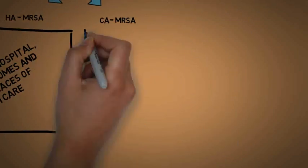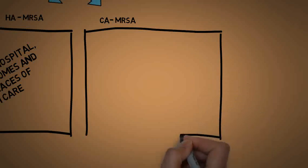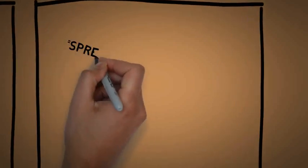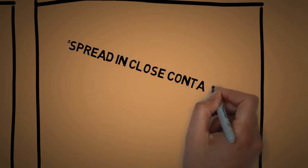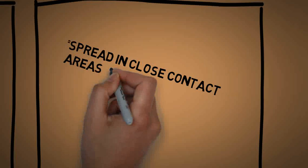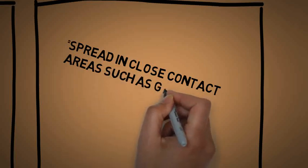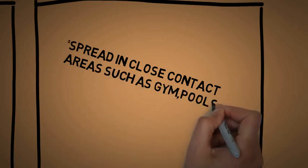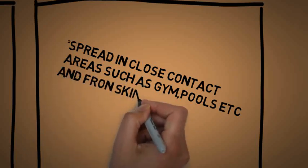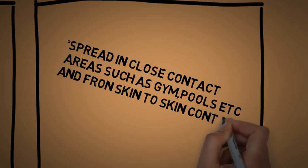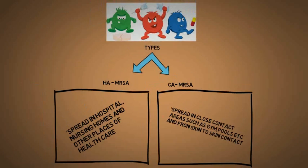CA-MRSA, or Community-Associated MRSA, spreads in close contact areas such as gyms and pools, or from skin-to-skin contact. It's a less common type of MRSA and usually occurs in younger people, with an average age of 23 years.